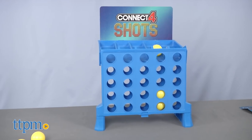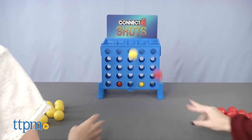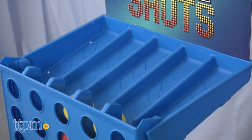Challenge a friend or split into teams, red versus yellow. And then at the same time, bounce. The ball must bounce on the table before going into the grid. The first player to get four balls in a row wins.